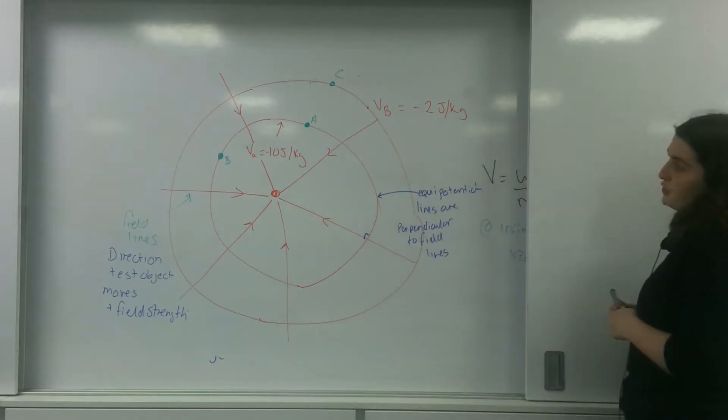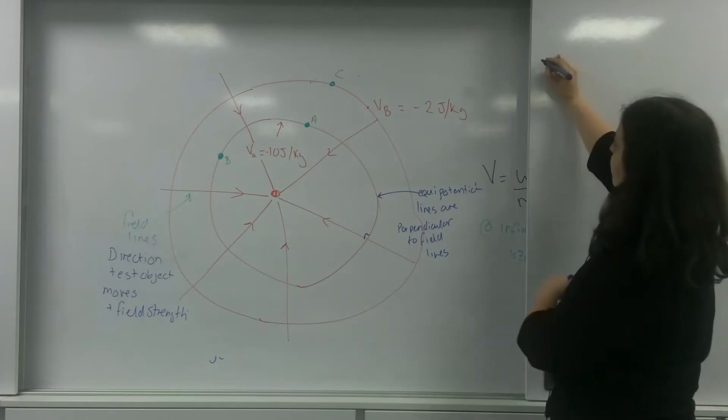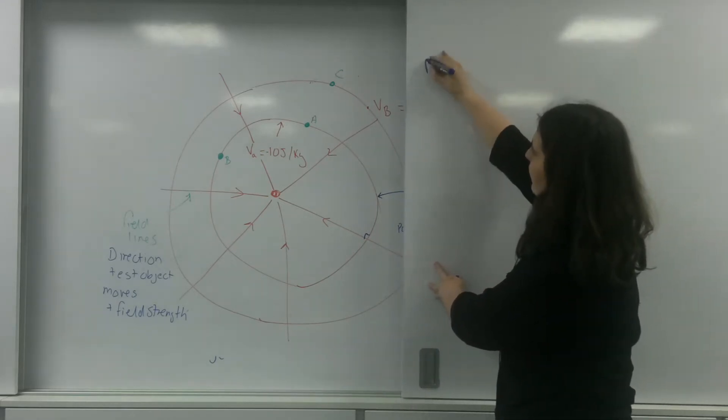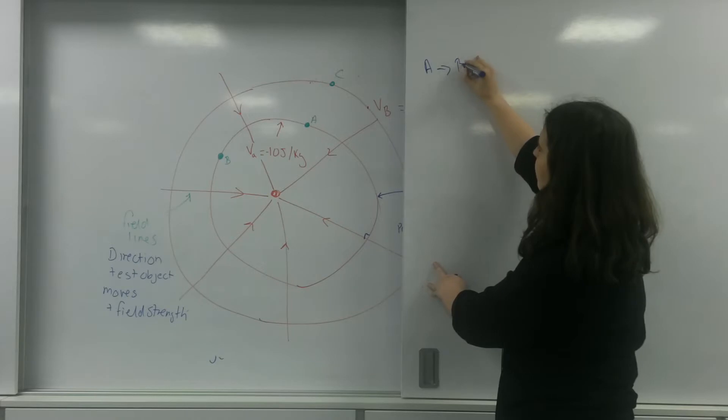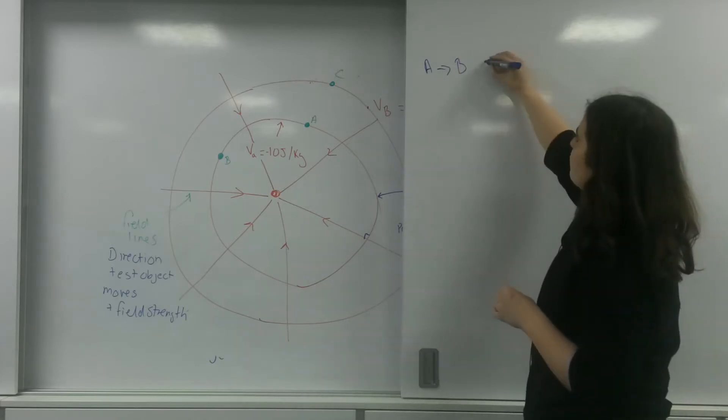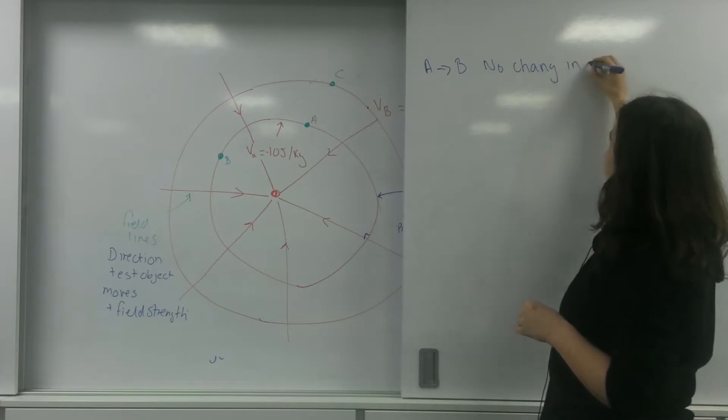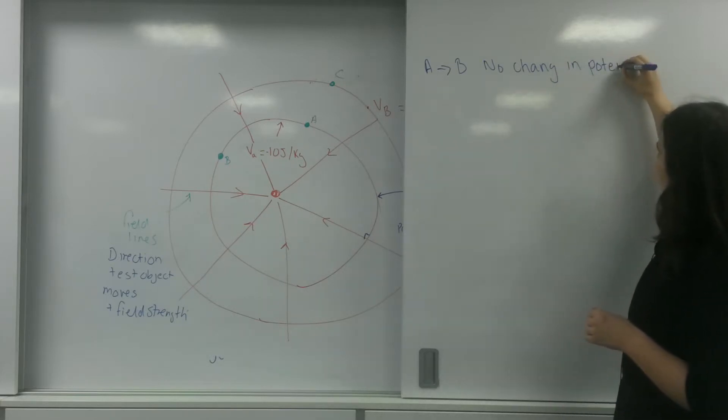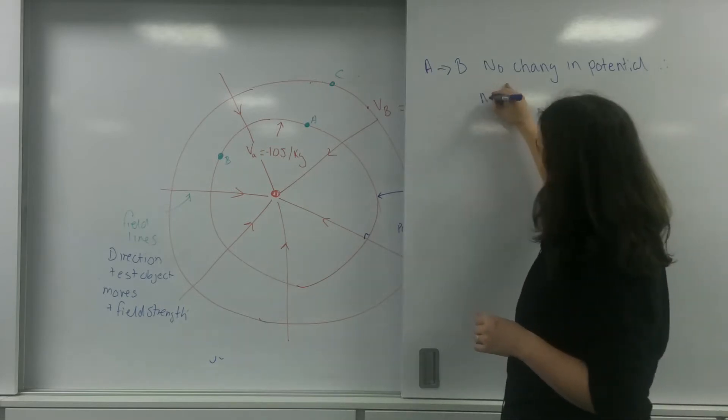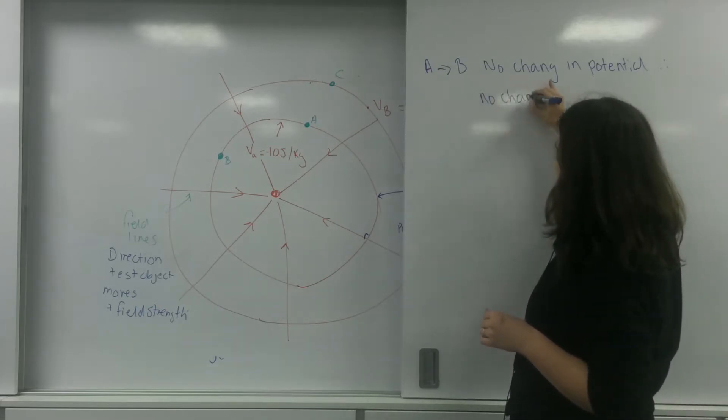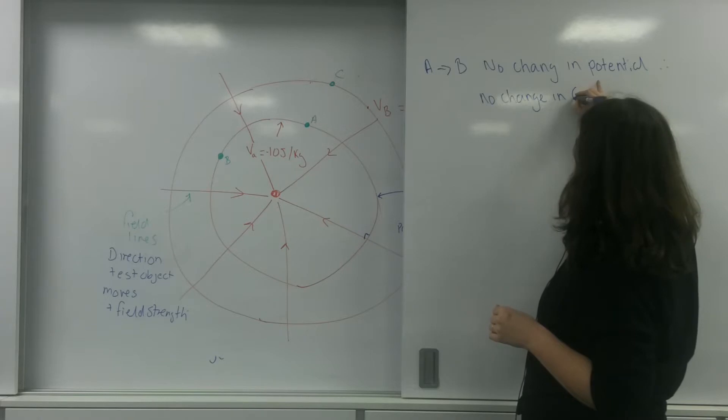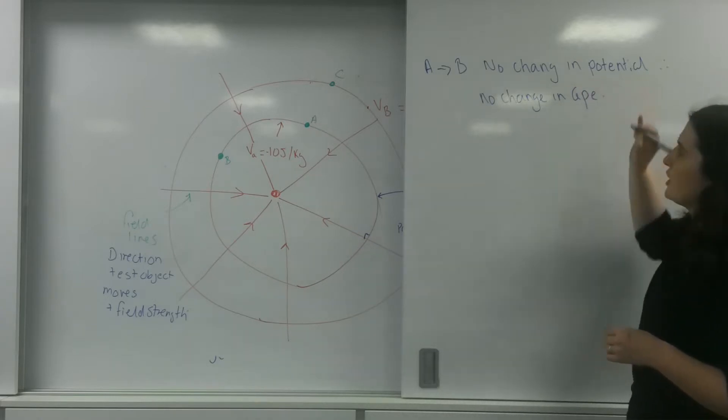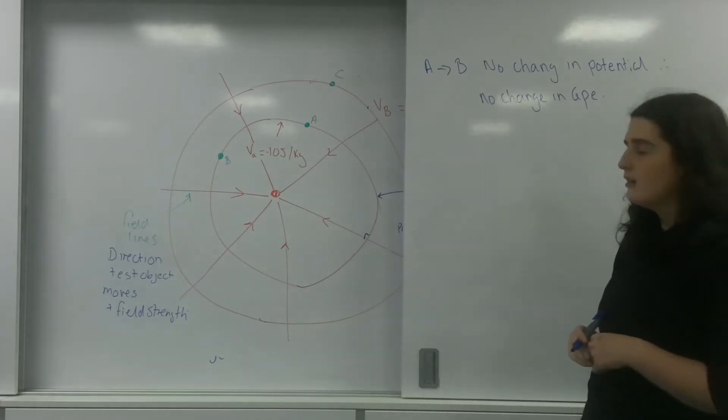So, what we're going to do, if I am moving, so let's put this information up here, if I'm going from A to B, there is no change in potential, therefore, no change in gravitational potential energy.